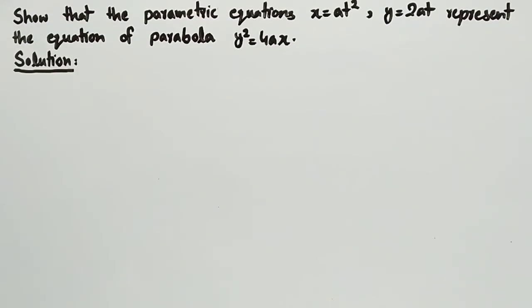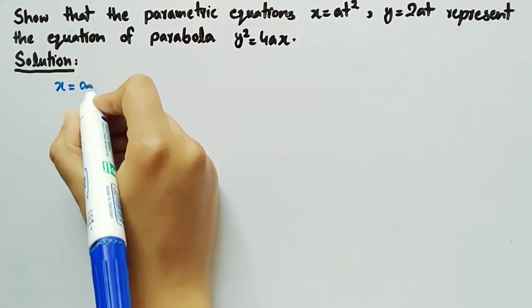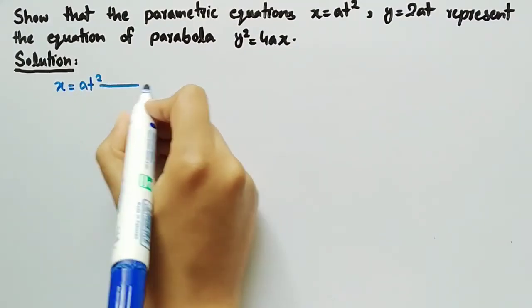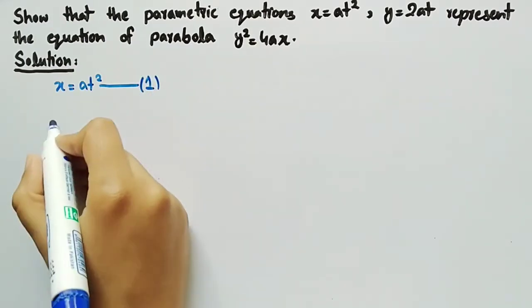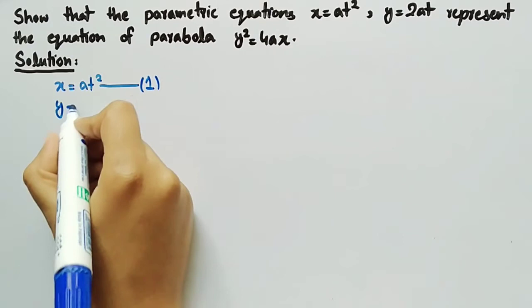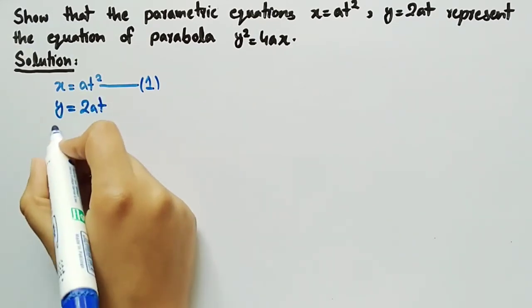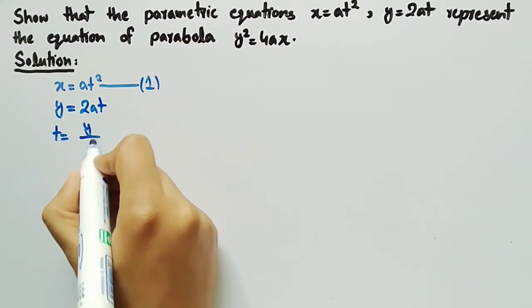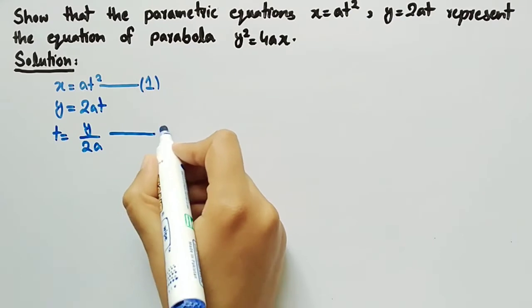Coming towards its solution, it is given that x equals a t squared. Let it be named as equation number 1. And it is also given that y equals 2at. We can write it as t equals y divided by 2a. Let it be named as equation number 2.